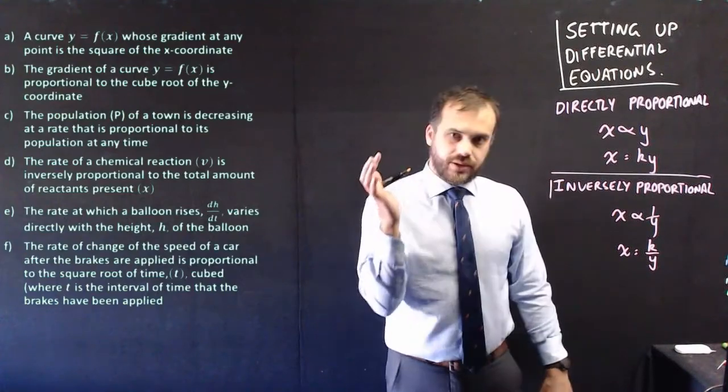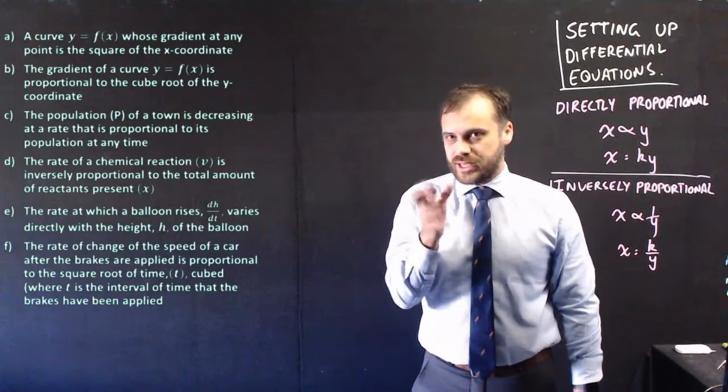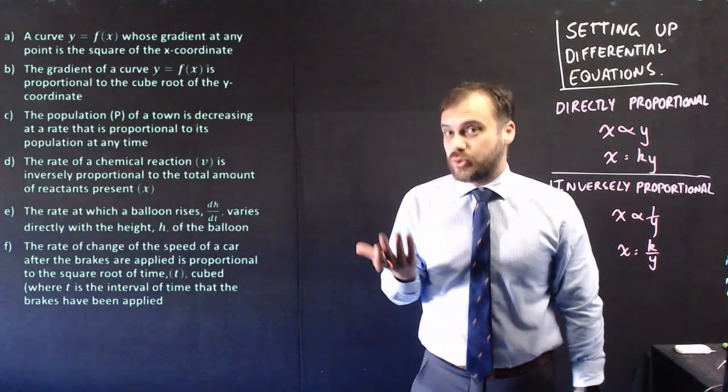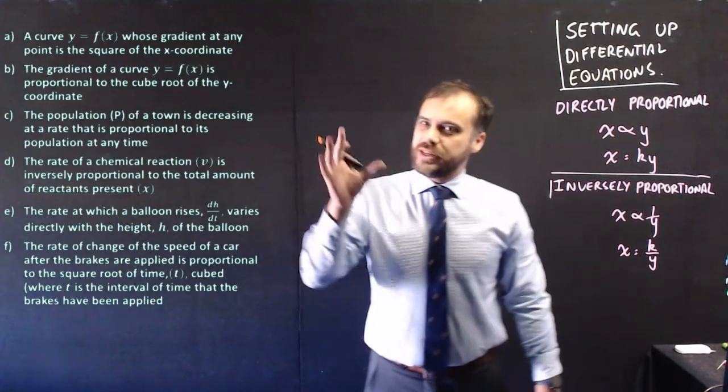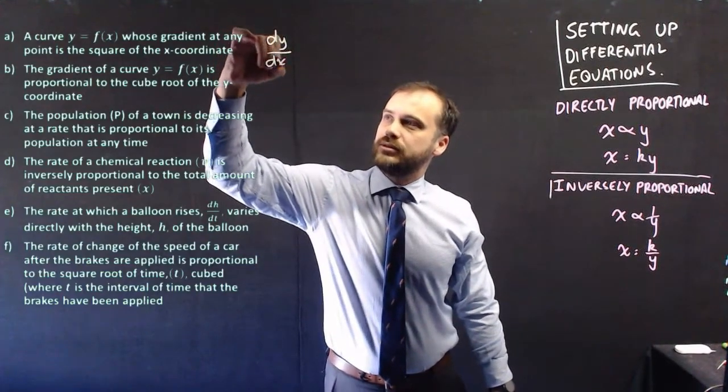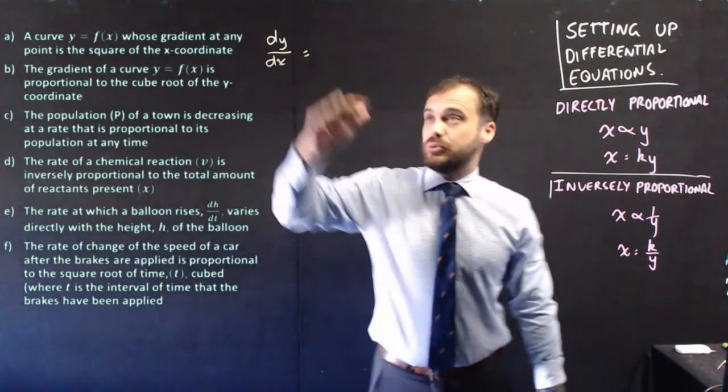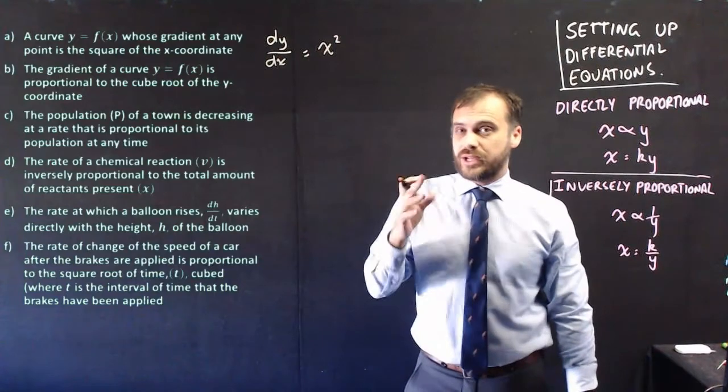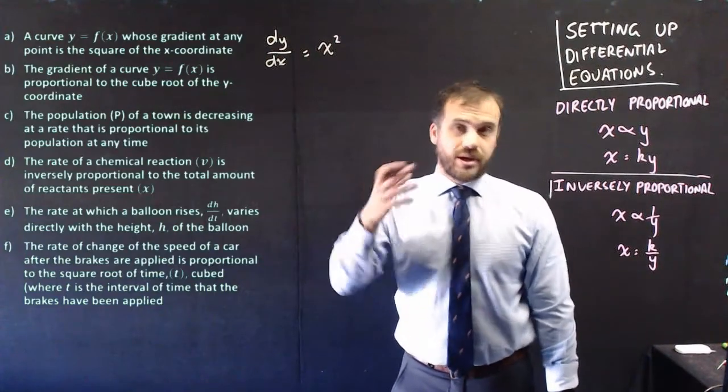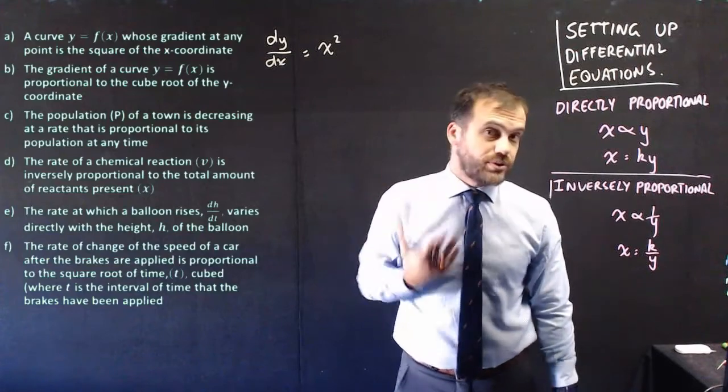So it's a curve whose gradient at any given point is equal to the x-coordinate squared. Alright, so the gradient of a curve is given by dy dx, and that's going to be equal to the x-coordinate squared. Alright, that's what we mean by setting up a differential equation, looking at some words and creating a differential equation from those words.